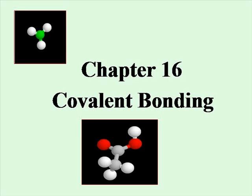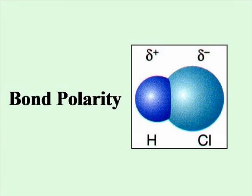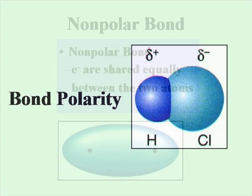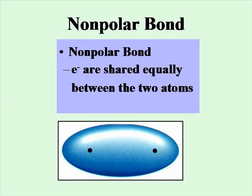Chapter 16, Covalent Bonding. Let's look at the polarity of a bond. When you have two atoms that have exactly the same electronegativity, the electrons are going to be shared equally between the two atoms. That's illustrated by this uniform electron cloud that's distributed around the two nuclei. This is a non-polar bond.